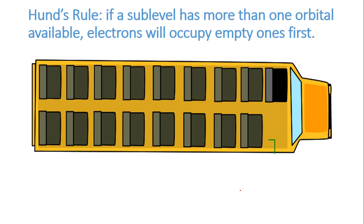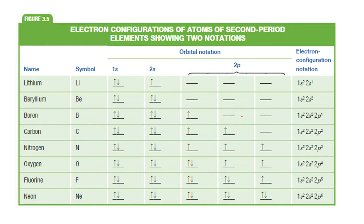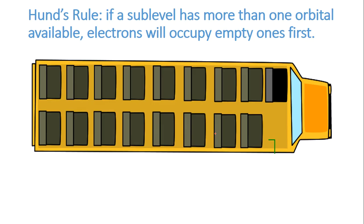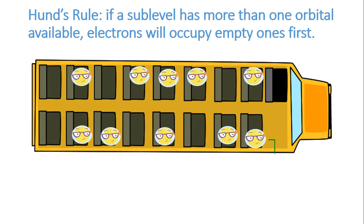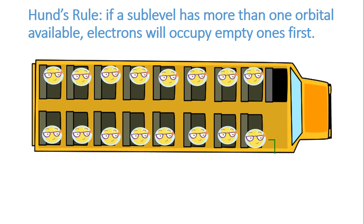The first rule is called Hund's rule — the rule about how they don't double up. If a sublevel has more than one orbital, like the p sublevel has three orbitals, the electrons don't want to double up; they will occupy the empty ones first. It's sort of like getting on a bus to Schenectady — when the whole bus is empty, you don't go sit next to that person. You go to your own space. And when all the spaces are full, that's when you start doubling up. That's Hund's rule.